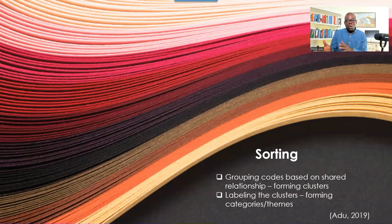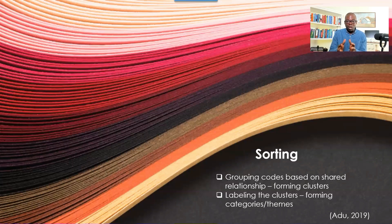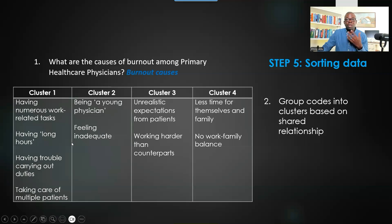After coding, we call it sorting. Sorting is just reviewing all the codes that you have developed and trying to put them together, group them based on the similarities, so that at the end you'll be able to get a theme to help you to address your research question.